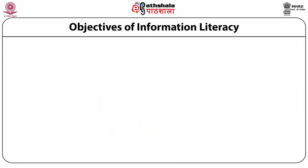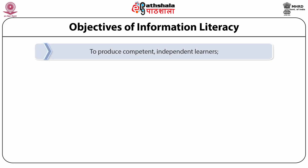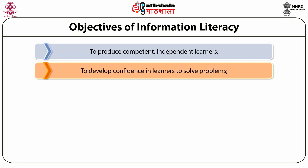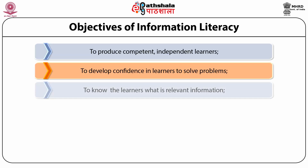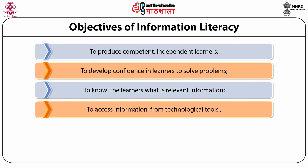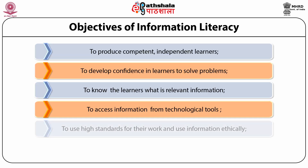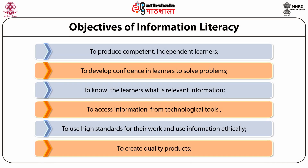There are various objectives of information literacy. These are: to produce competent independent learners, to develop confidence in learners, to solve problems, to inform learners what is relevant information, to access information from technological tools, to use high standards for their work and use information ethically, and to create quality products.